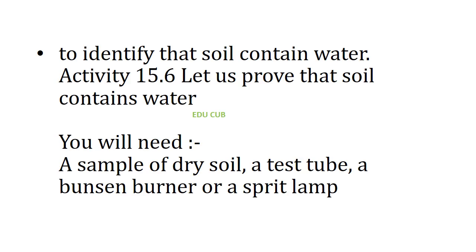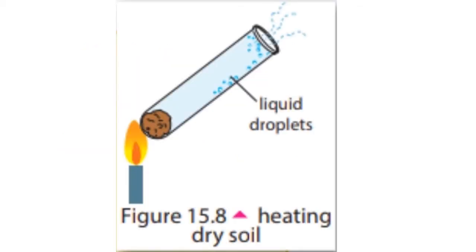Here you have to do an activity to identify that soil contains water. You will need a sample of dry soil, a test tube, and a Bunsen burner or a spirit lamp. First of all, you have to put a sample of soil into the test tube and heat it. Write down your observations.